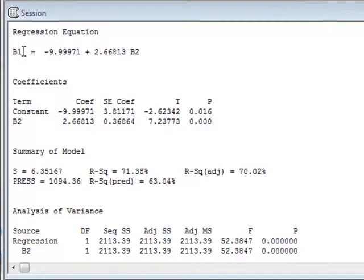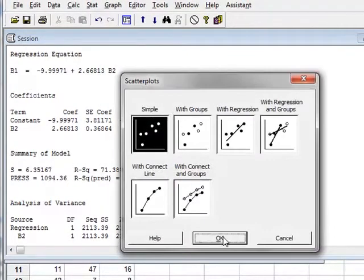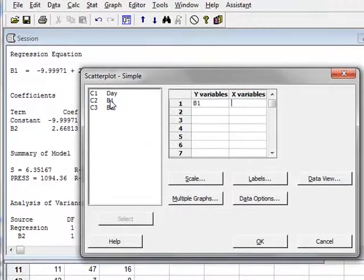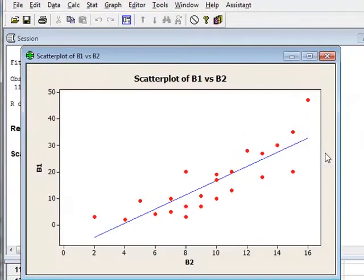We can look at this on an XY graph by using a scatter plot, simple, with the y variable B1 and the x variable B2. Under data view we will draw the best fit straight line. Here we see the best fit straight line and the origin of the graph at 0,0 is just here. We can see that this does not make a realistic fit to these data points.